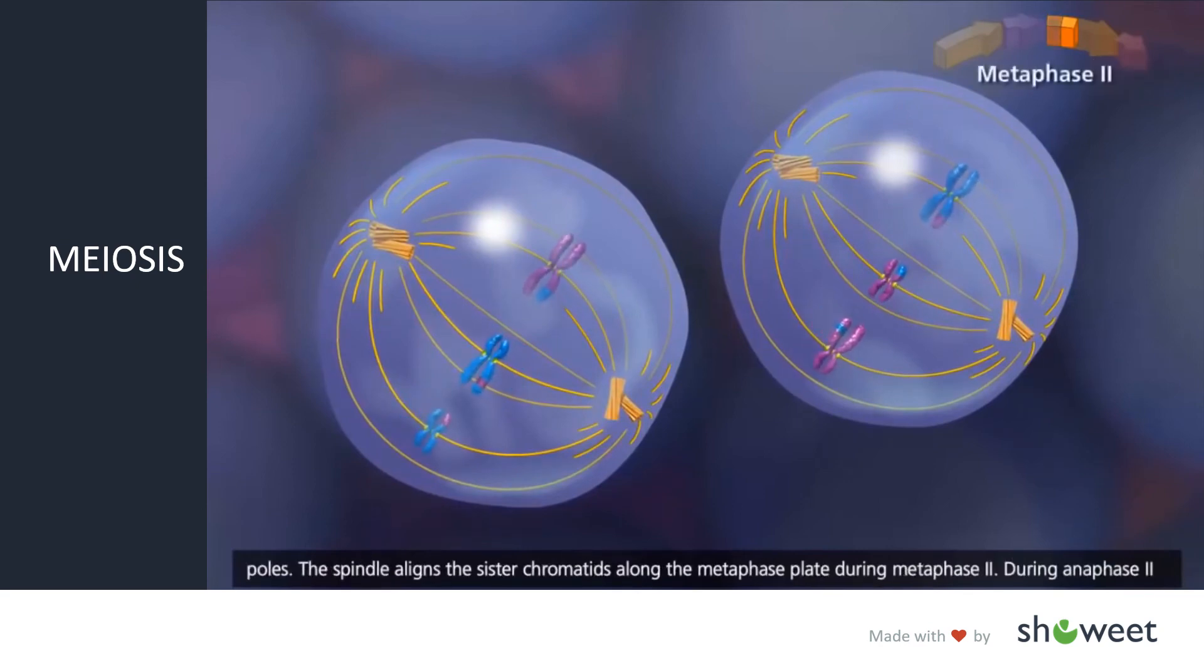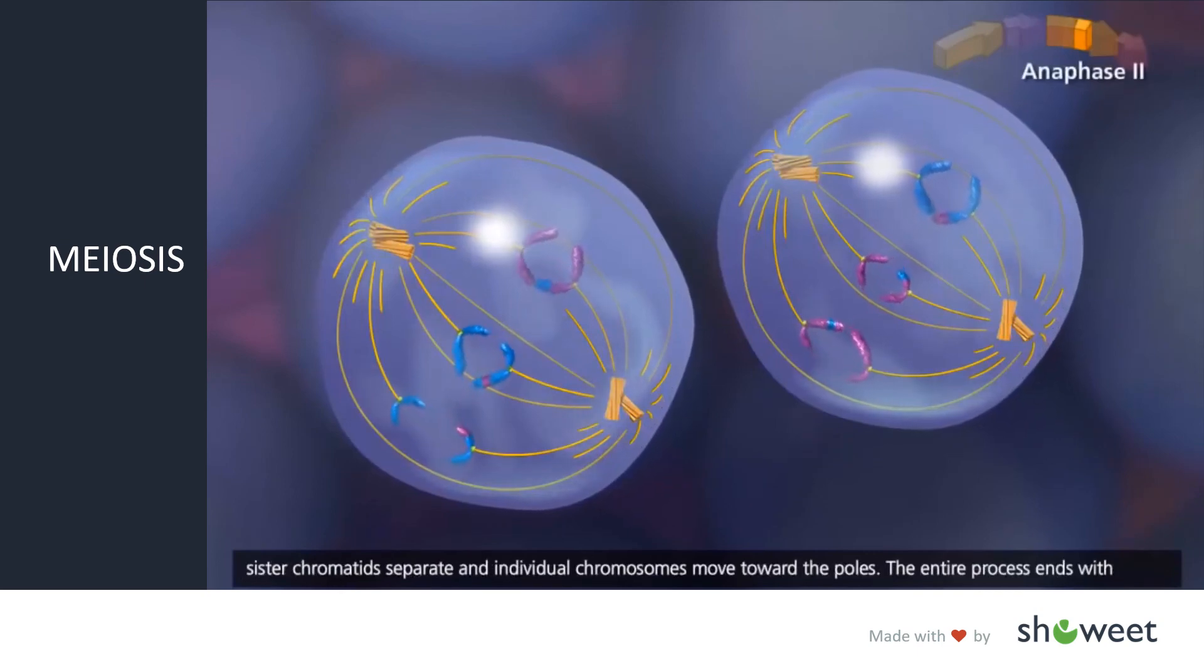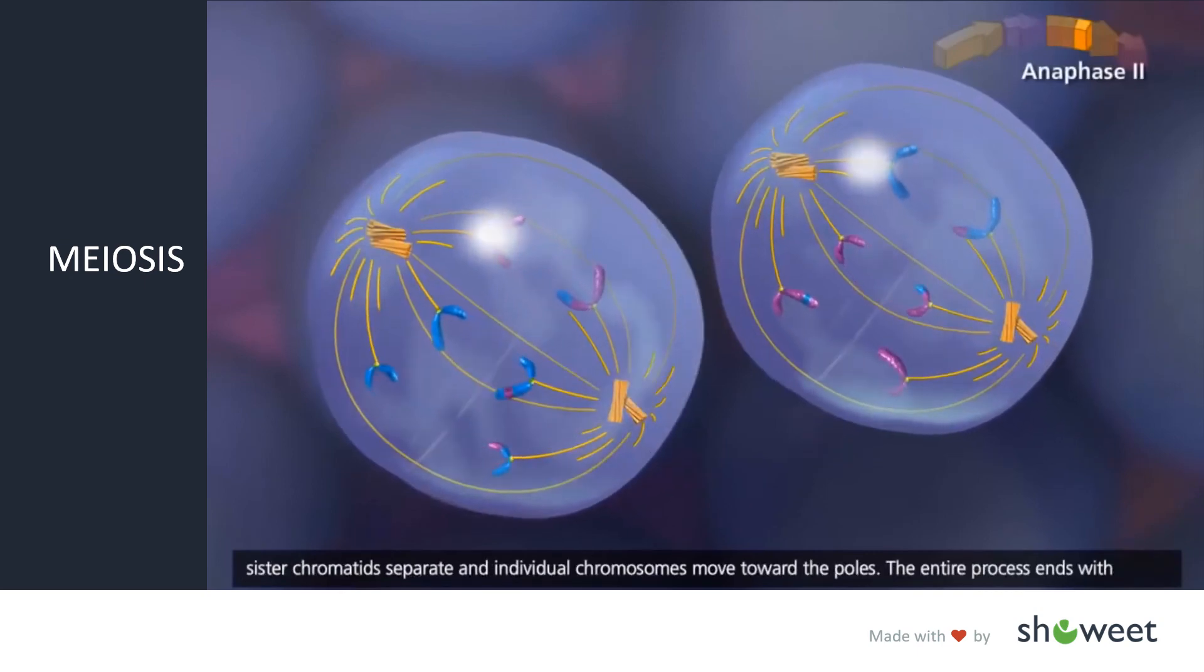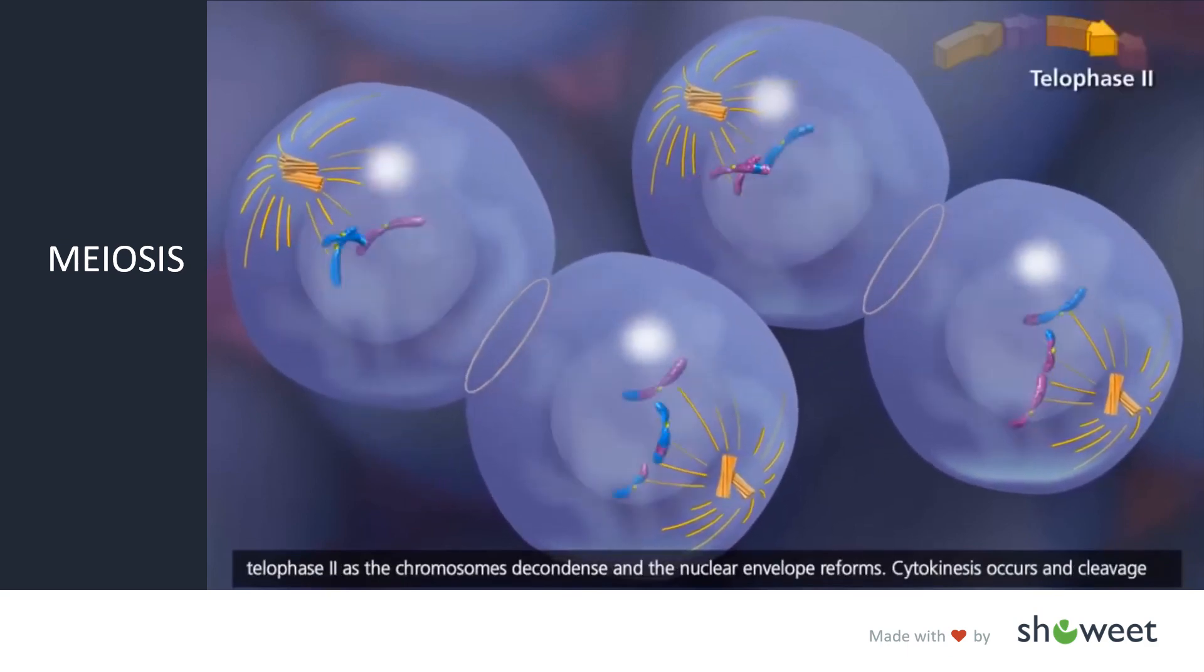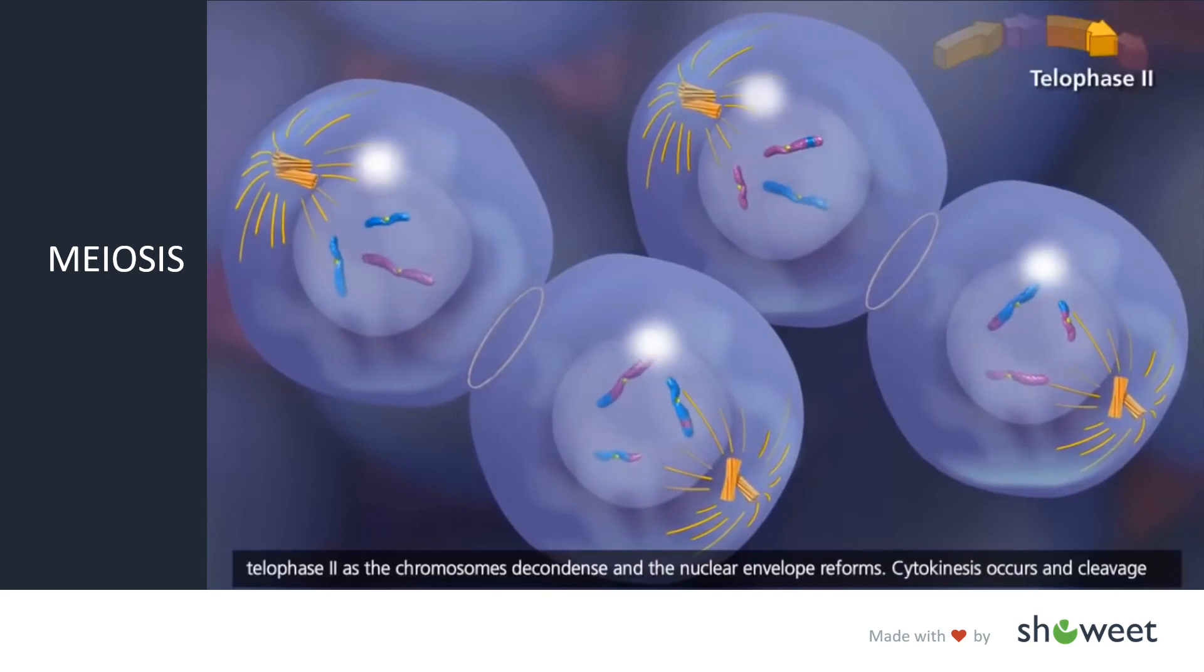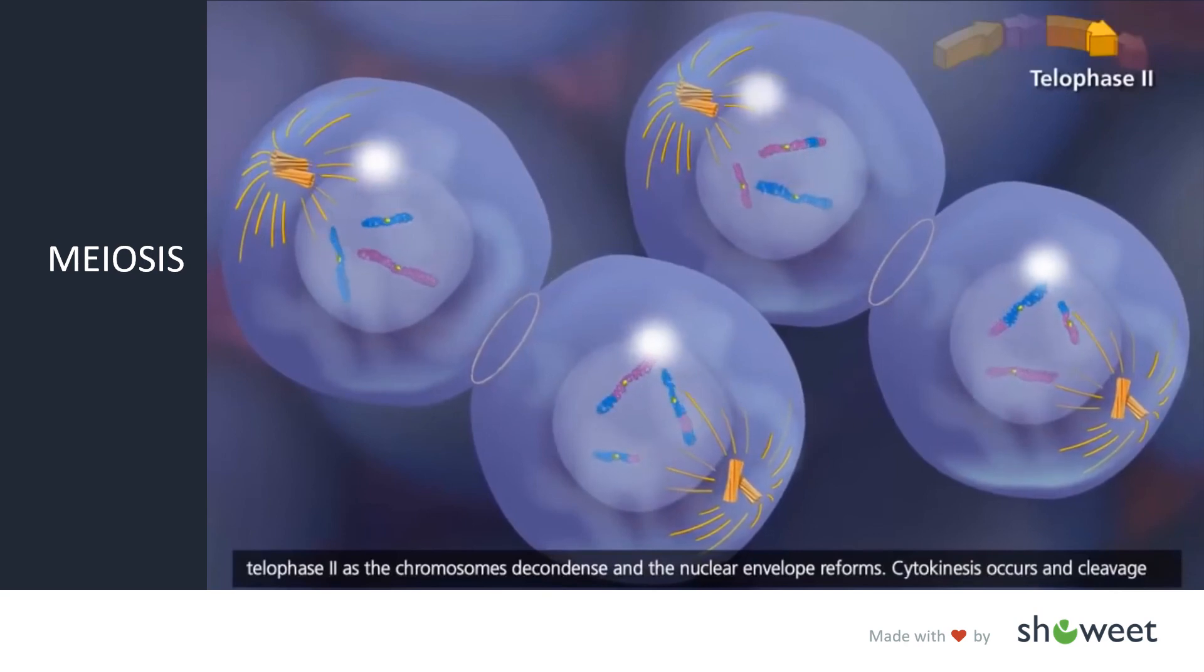The spindle aligns the sister chromatids along the metaphase plate during metaphase II. During anaphase II, sister chromatids separate and individual chromosomes move toward the poles. The entire process ends with telophase II, as the chromosomes decondense and the nuclear envelope reforms.